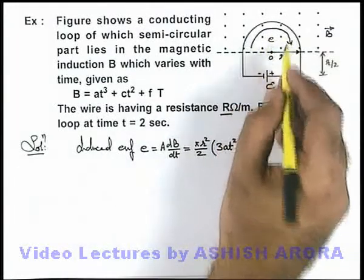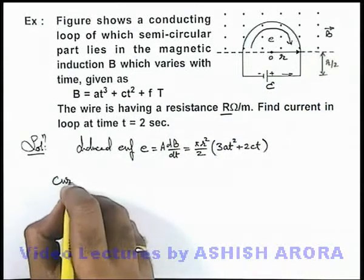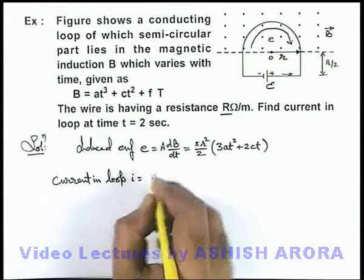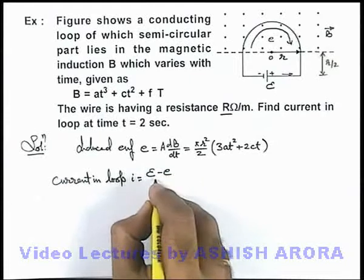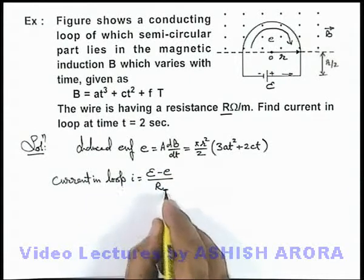Now this EMF is opposing the external battery, so here we can directly write current in loop i. This we can write as battery EMF minus the induced EMF divided by the resistance, total resistance we can denote it by R_T.